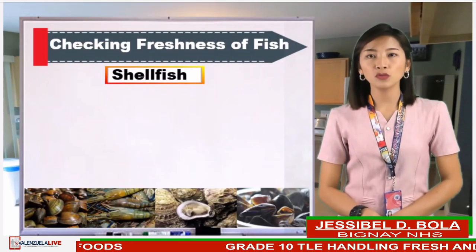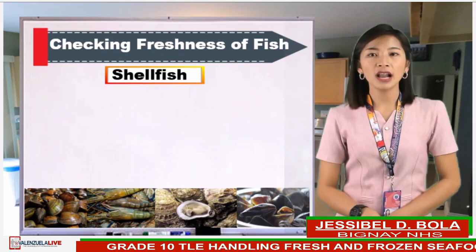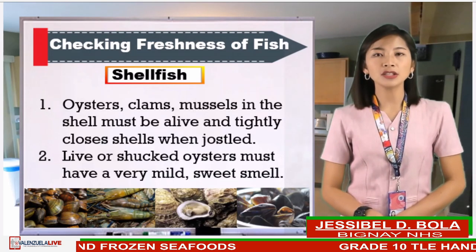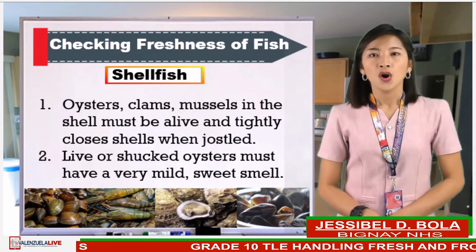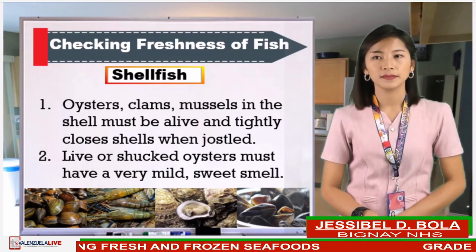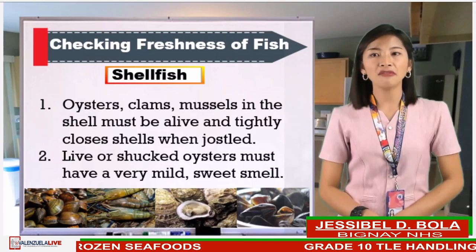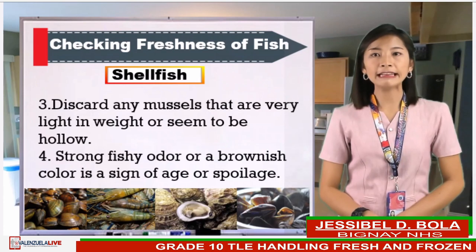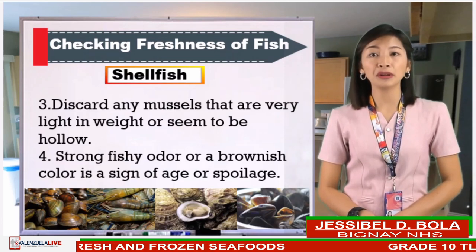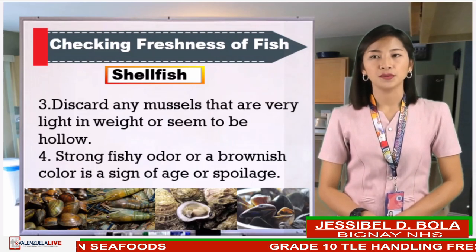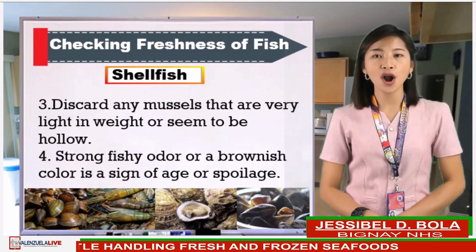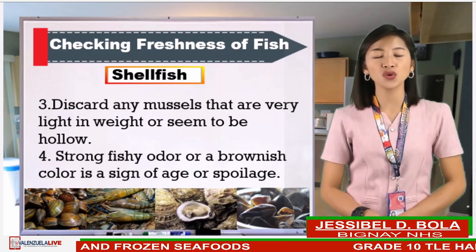Let's move on to checking the freshness of shellfish — any aquatic invertebrate animal having a shell belonging to phylum Mollusca. Oysters, clams, and mussels in the shell must be alive and tightly closed when jostled. Live or shucked oysters must have a very mild, sweet smell. Discard any mussels that are very light in weight or seem to be hollow — discard meaning to remove, reject, or dispose. A strong fishy odor or brownish color is a sign of age or spoilage, so that is not good to consume or store anymore.